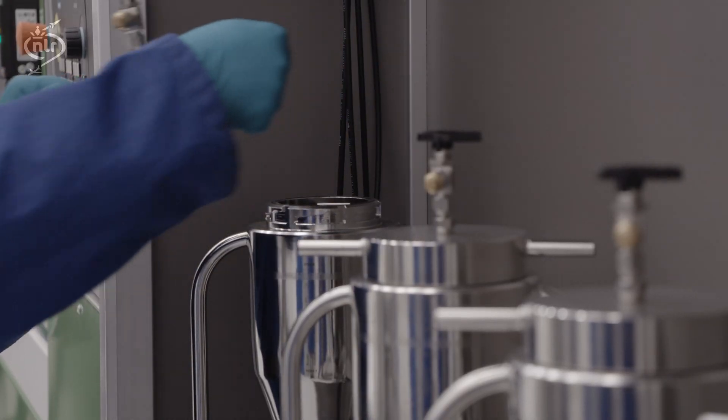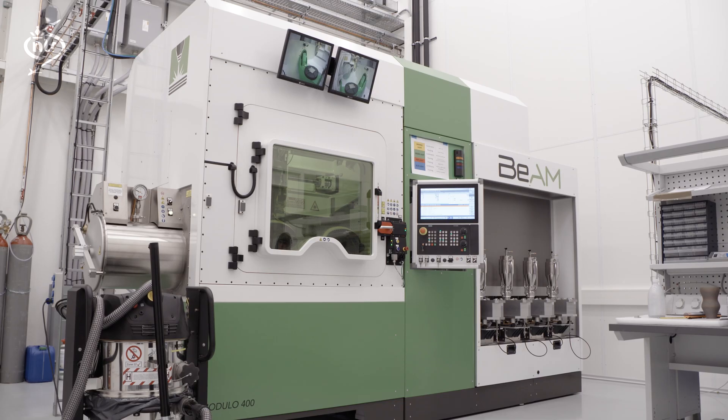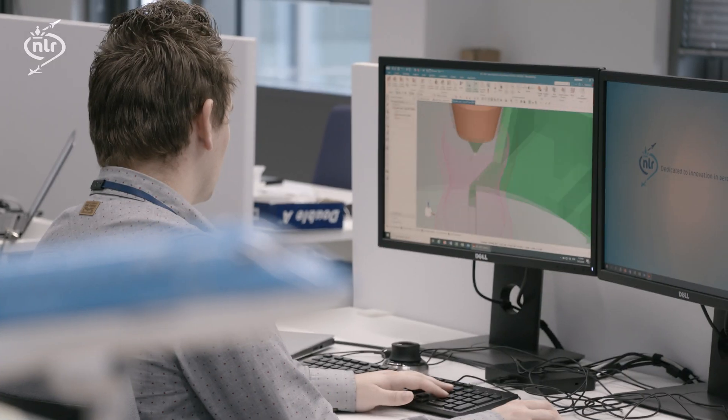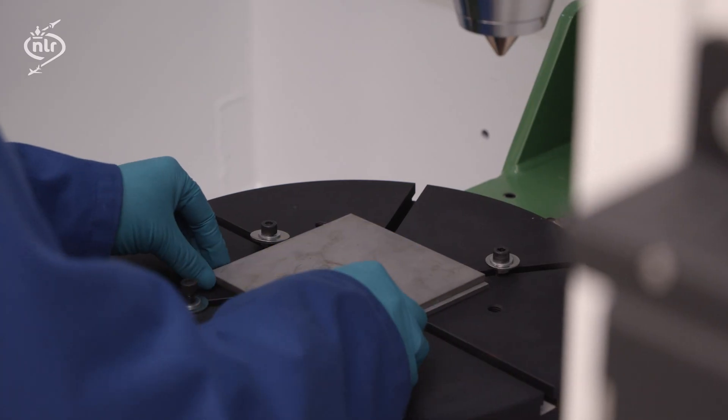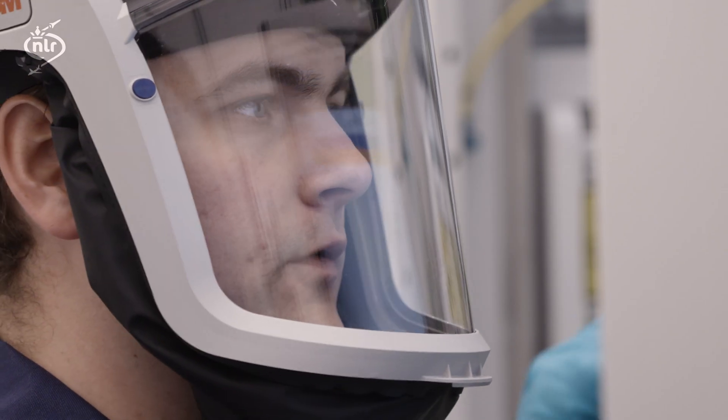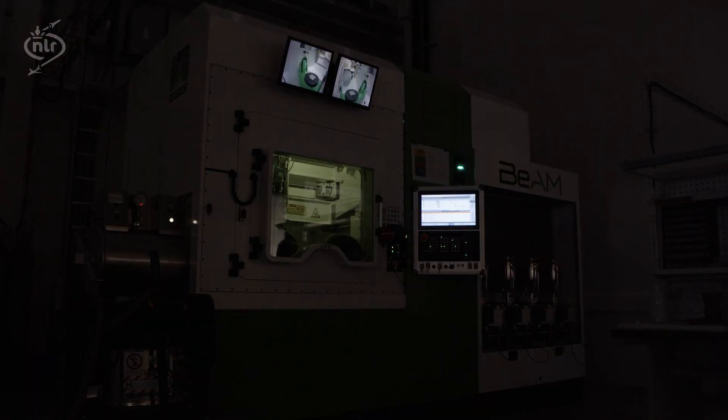First, the blown powder-directed energy deposition, which uses a laser to melt powder that is deposited through a nozzle. This process can be used to manufacture parts, add features on existing products, or carry out repairs.